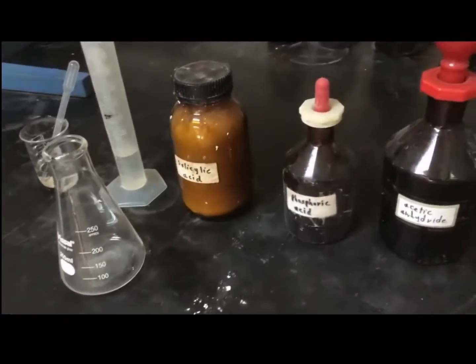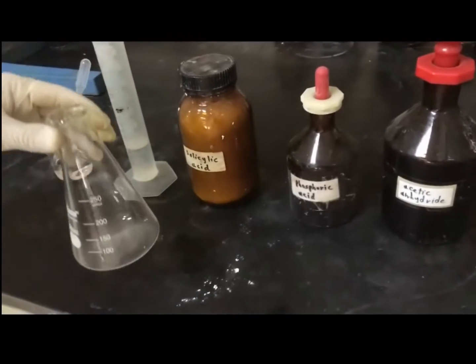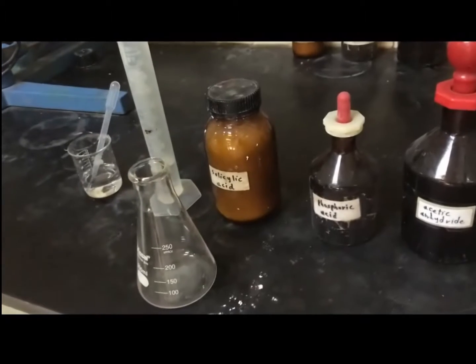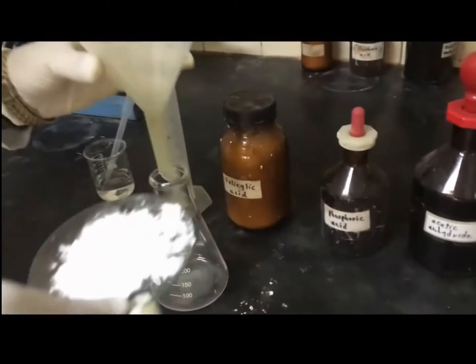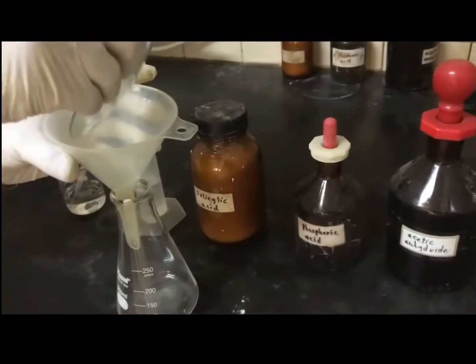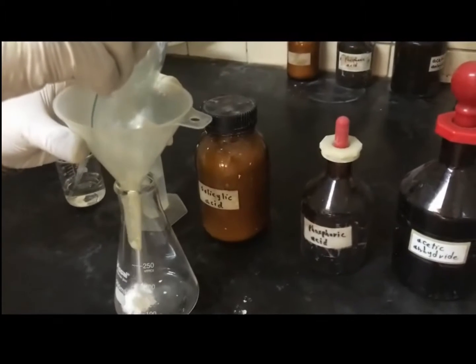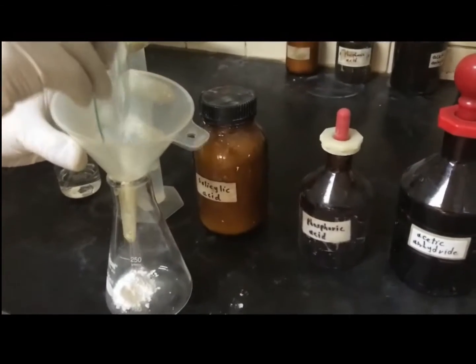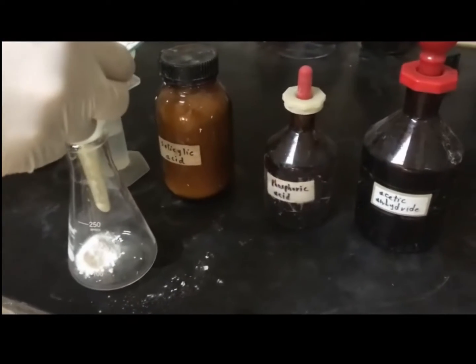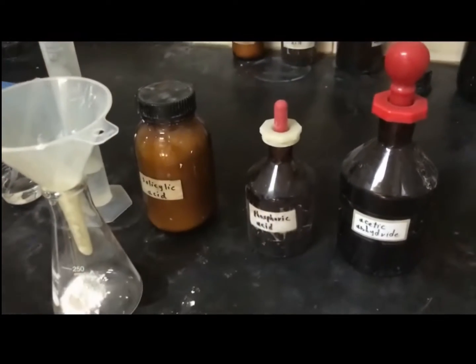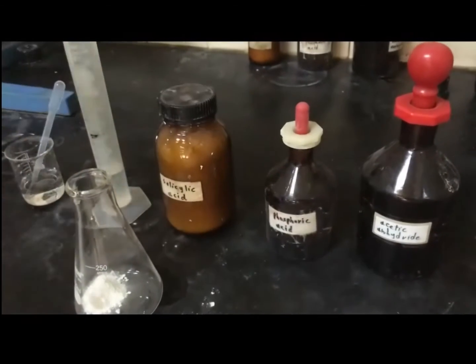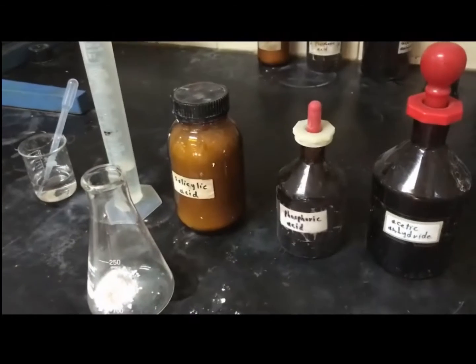Start with a 250 ml Erlenmeyer flask and add 3 grams of salicylic acid. Now add 6 ml of acetic anhydride to the flask and shake the mixture.